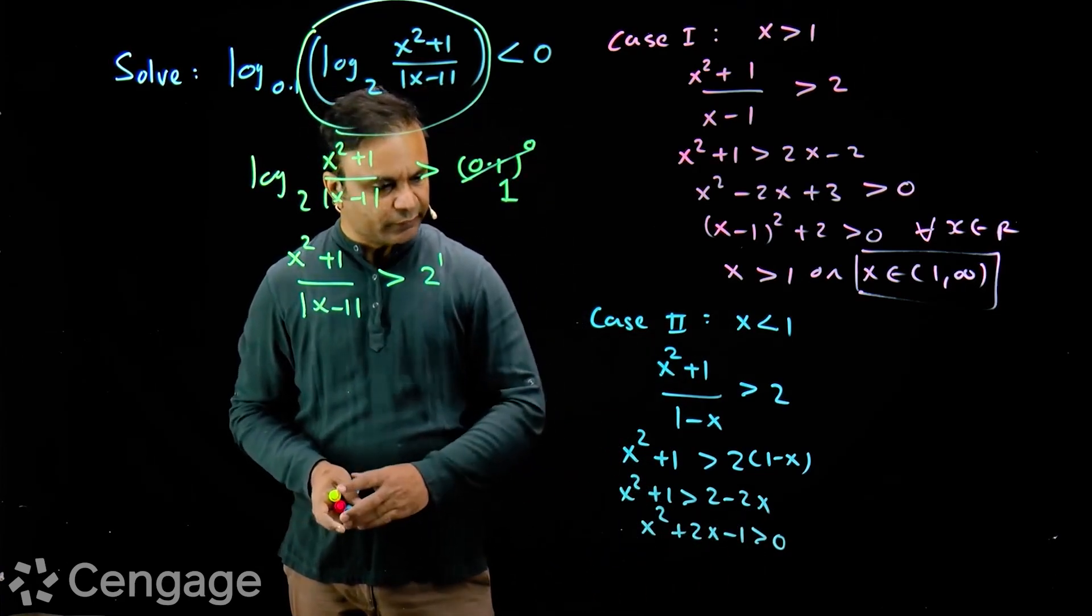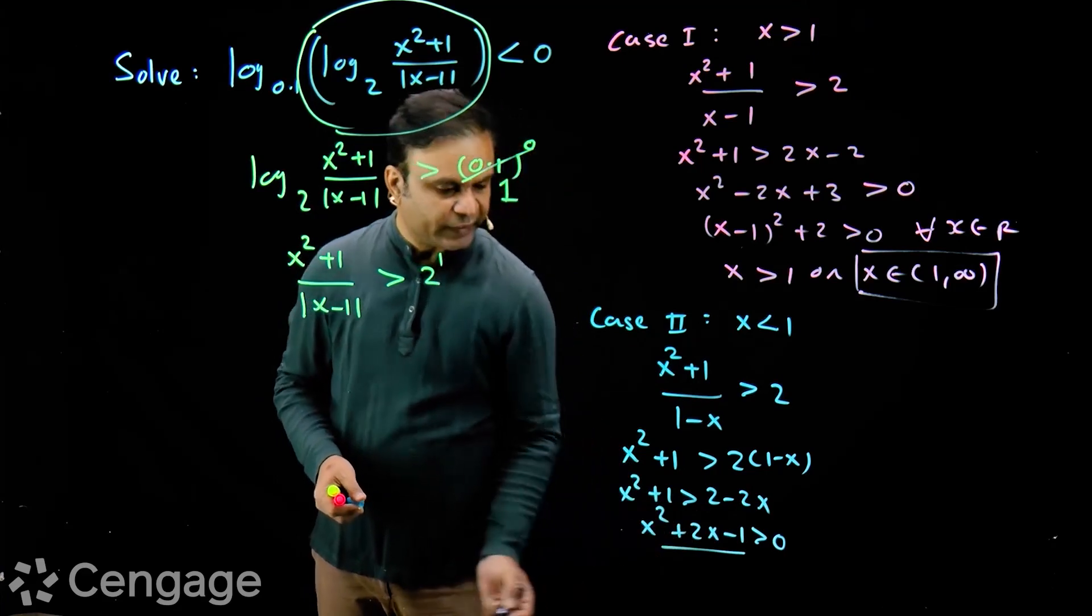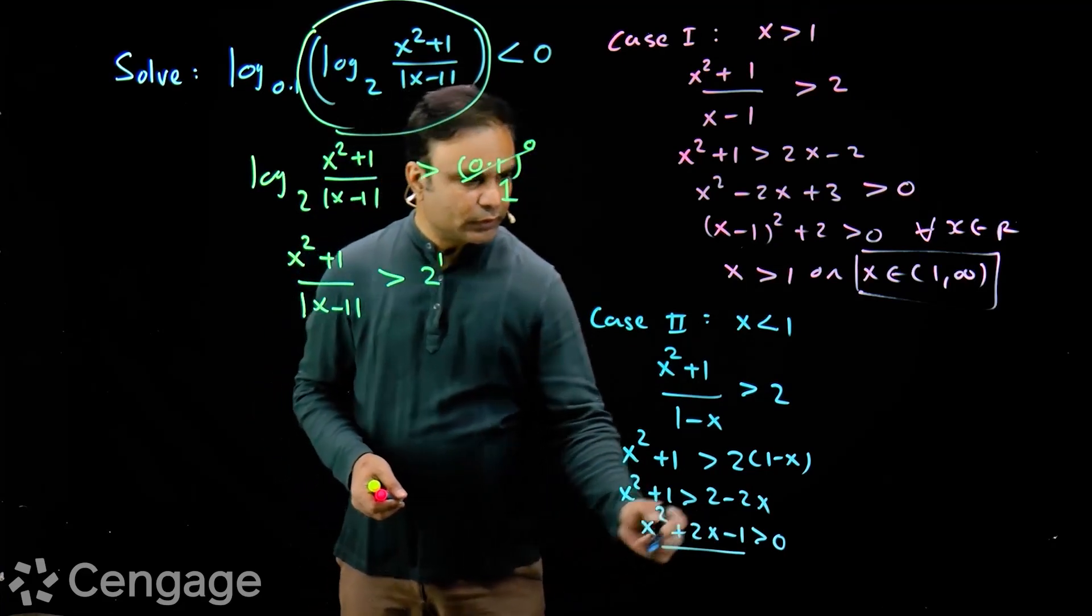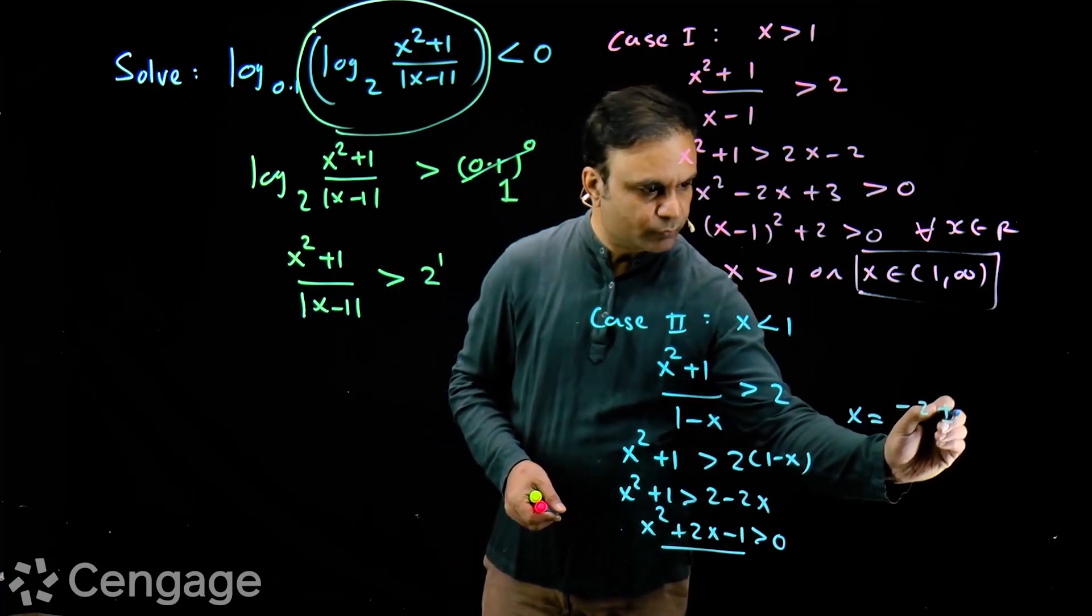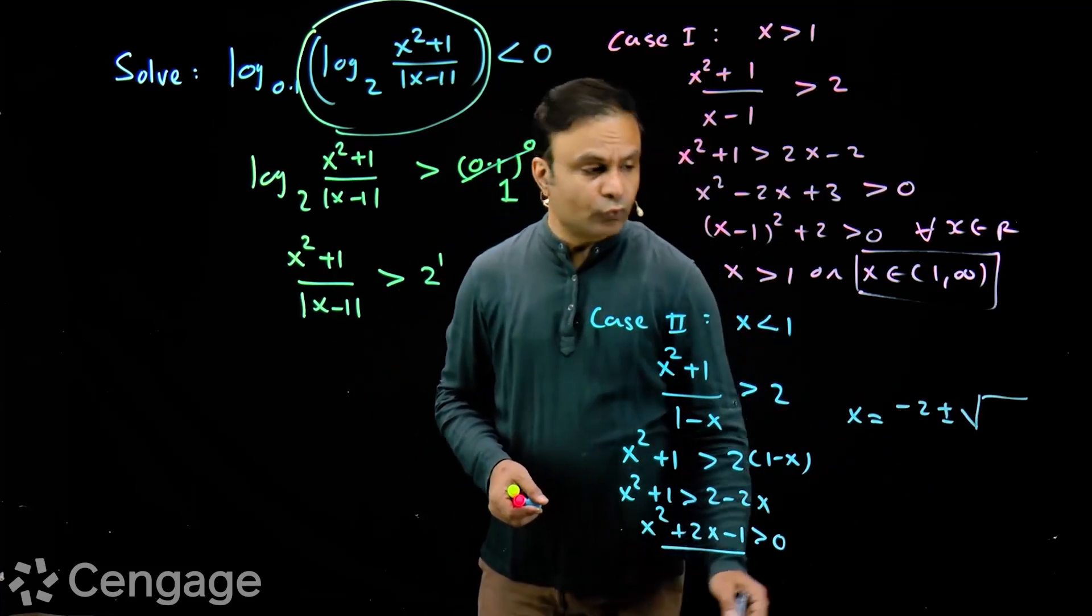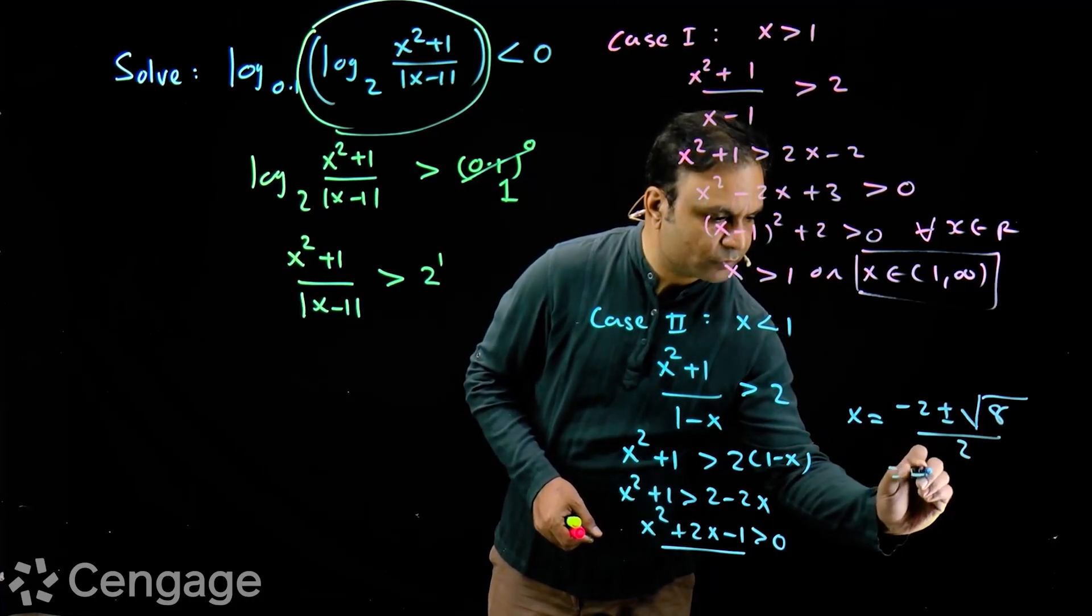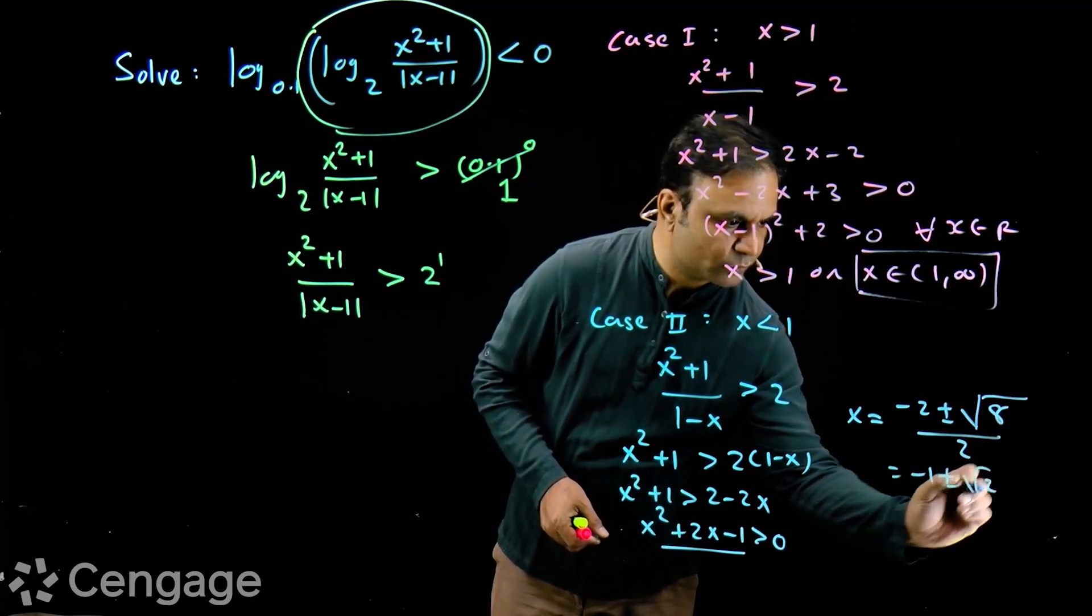Let us solve this inequality. How you solve by the way? When I compare this expression to 0, I get x is equal to minus 2 plus minus root of 4 plus 4, 8 upon 2. This is equal to minus 1 plus minus root 2.